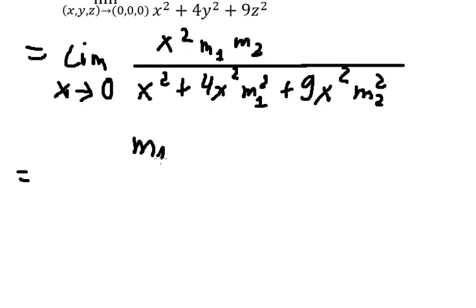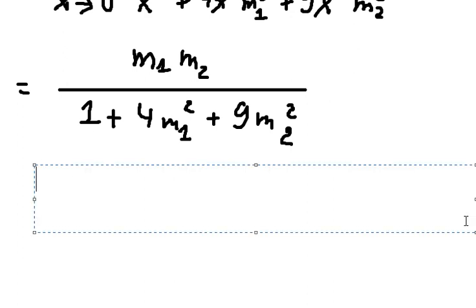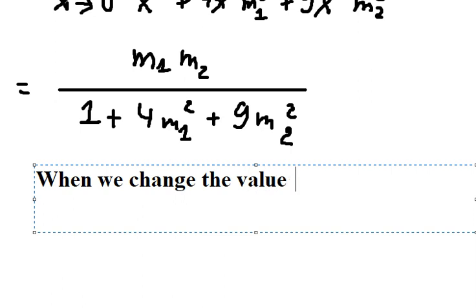So we have like this, that is about m₁m₂ over 1 + 4m₁² + 9m₂². So we can see that when we change the values of m₁, m₂, we have different values of limit.